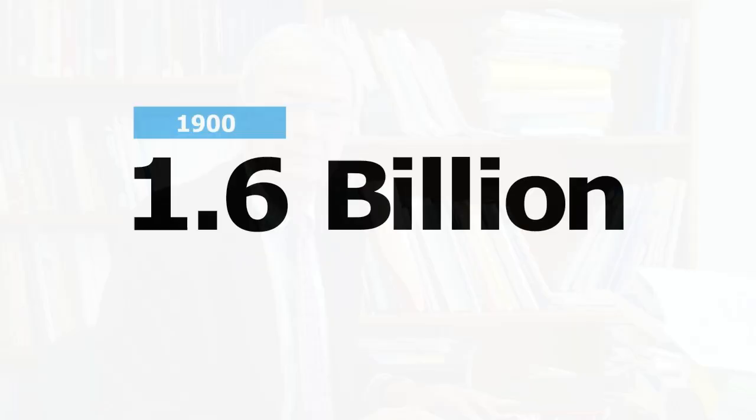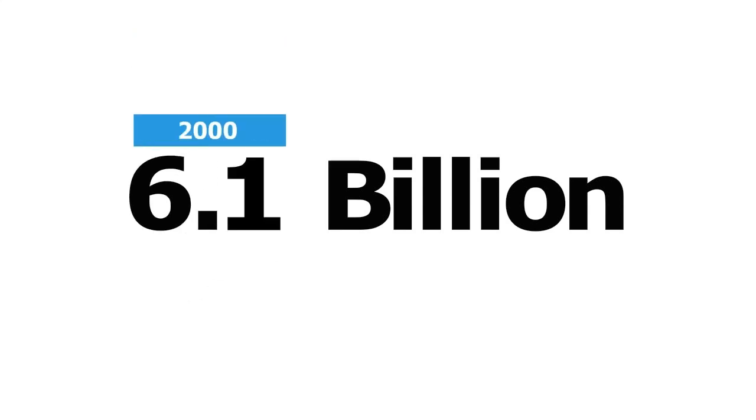Now, why is mortality so important? Let's just take a look at two numbers. The first one is world population in 1900: 1.6 billion. Now watch what happens when we move ahead to 2000: 6.1 billion. Did you notice those two numbers just change places? This has to be one of the more significant events in human history — when we went from 1.6 billion to 6.1 in just 100 years.